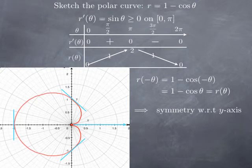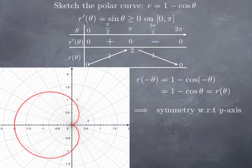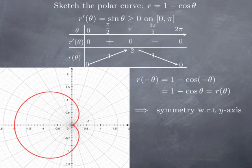Note: what was written on screen said symmetry with respect to the y-axis, but it should be with respect to the x-axis. Now if we smooth things out, this is what we get — our polar curve r equal 1 minus cosine theta.